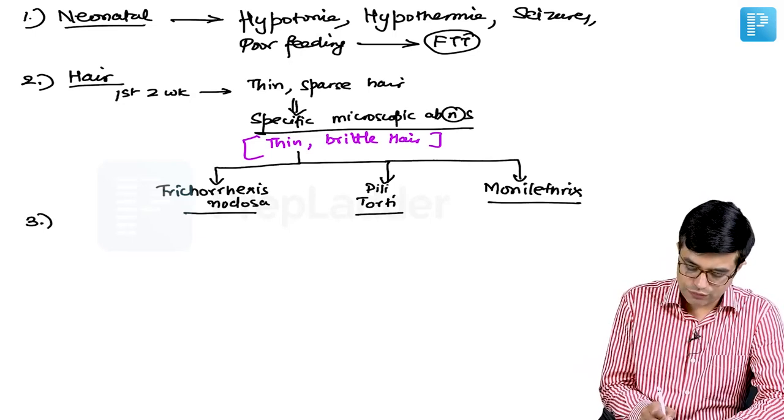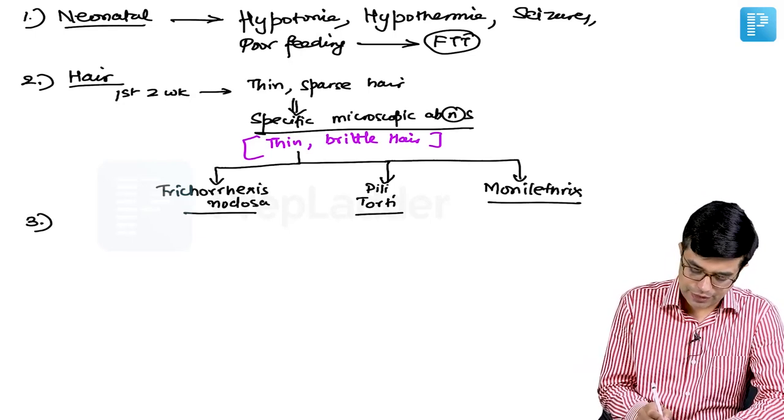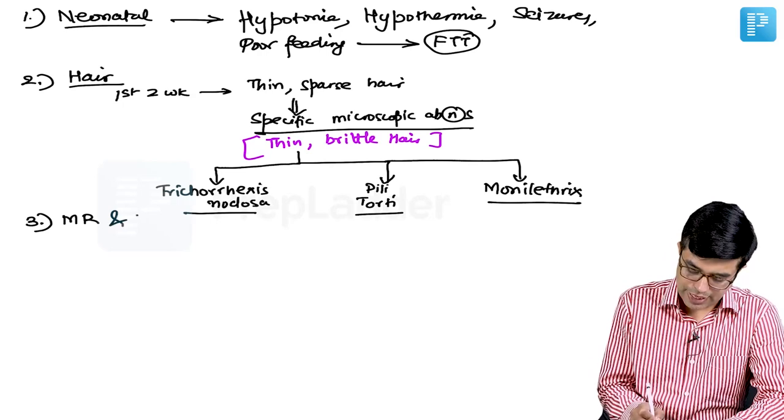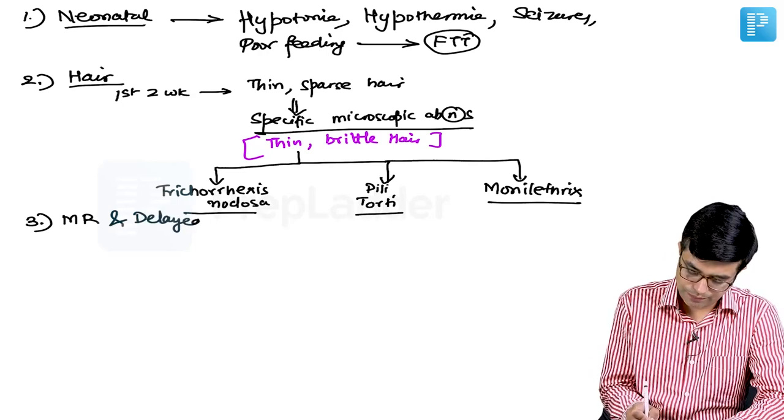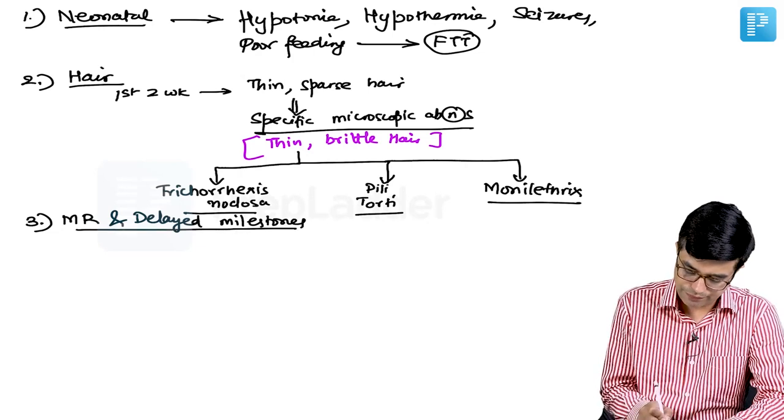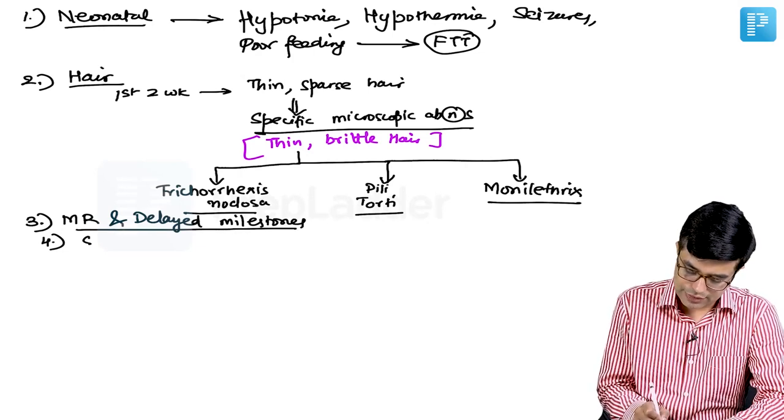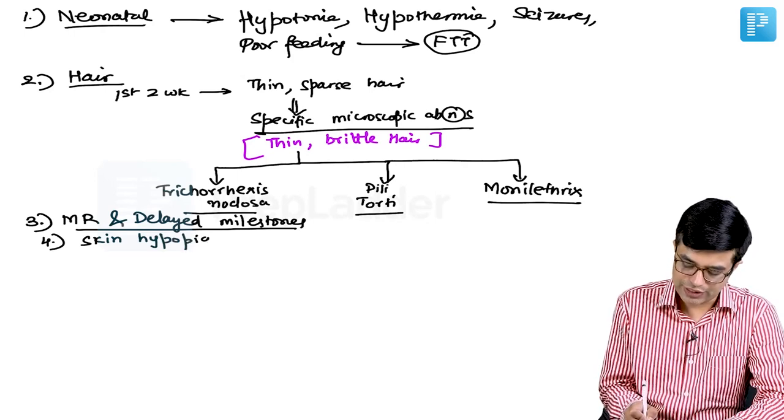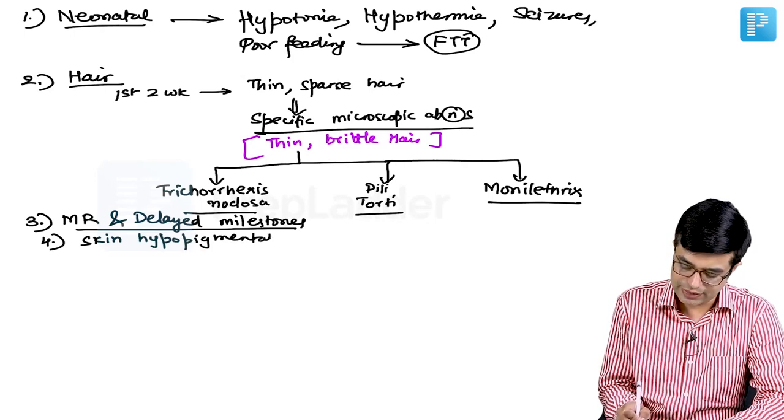Other than hair abnormalities, you will find that these children have mental retardation and delayed milestones. And some of these individuals will also have skin hypopigmentation, but it is not a very consistent feature. These are the features of Menkes Kinky Hair Syndrome.